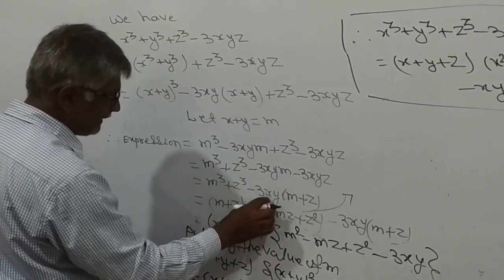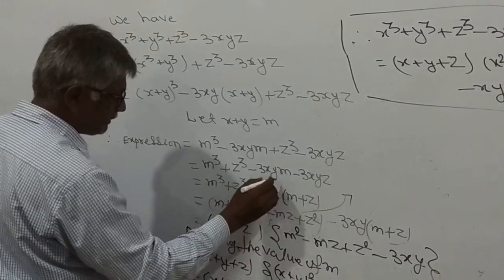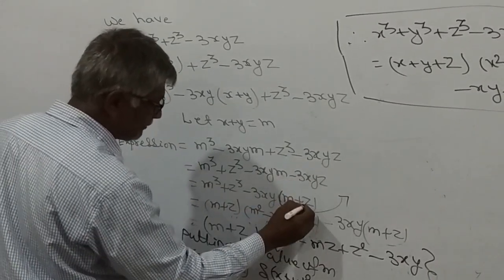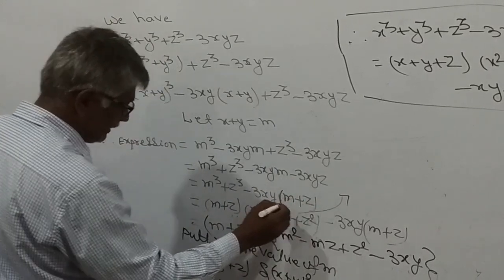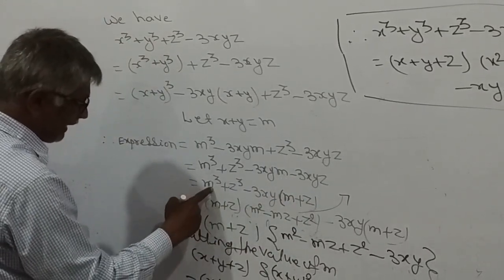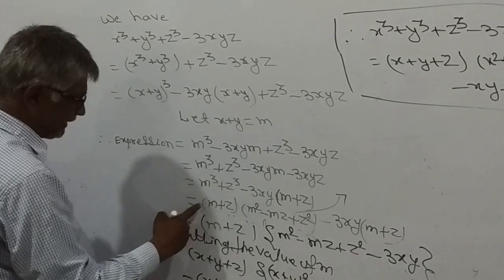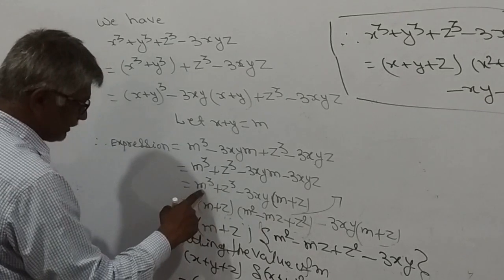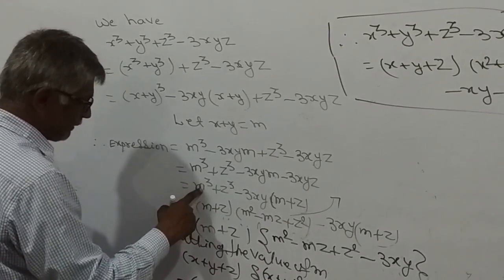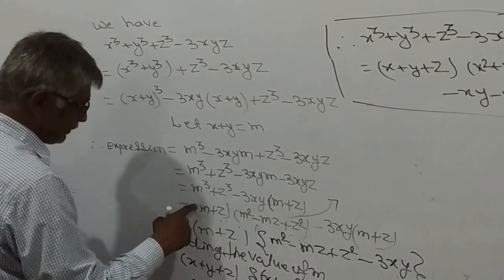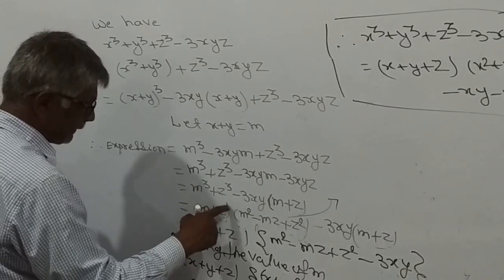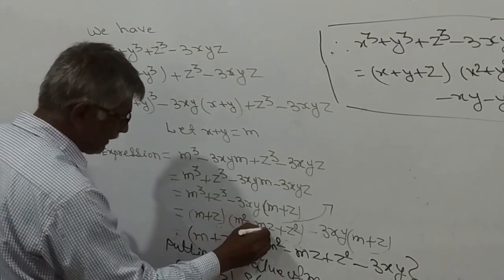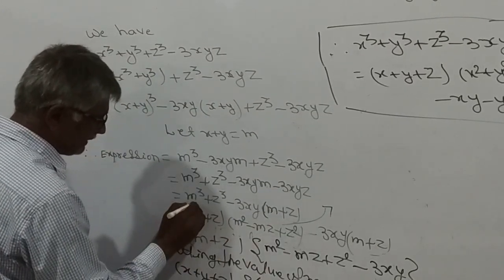Take 3xy as common: m³ + z³ − 3xy(m + z). Now apply the sum of cubes identity: a³ + b³ = (a + b)(a² − ab + b²). So m³ + z³ = (m + z)(m² − mz + z²). Therefore we have (m + z)(m² − mz + z²) minus 3xy(m + z).